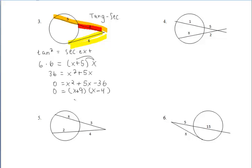Don't forget we have to set each of those factors equal to 0. So we end up getting that x can either be negative 9 or positive 4. Since we can't have a negative segment, we have to go with the positive version for the answer. So x has a value of 4.